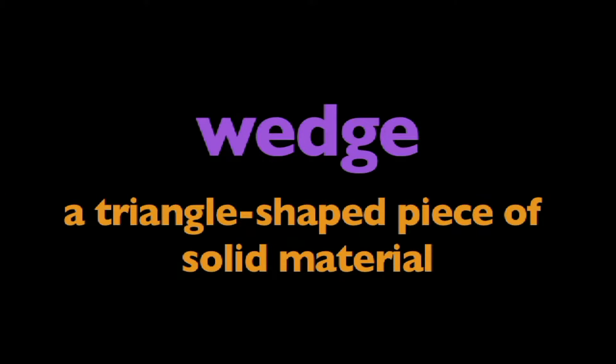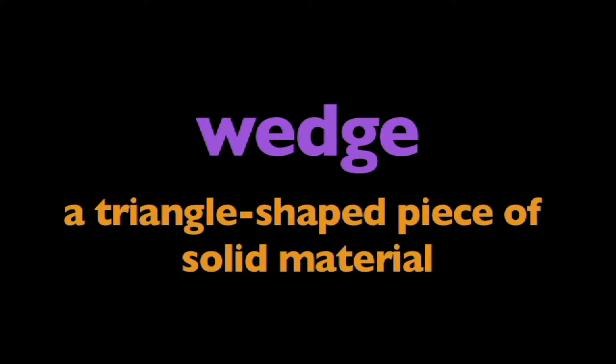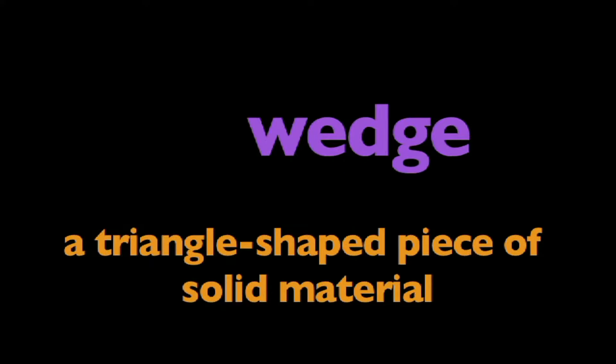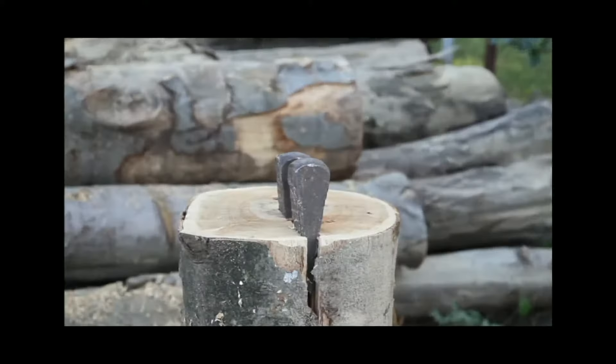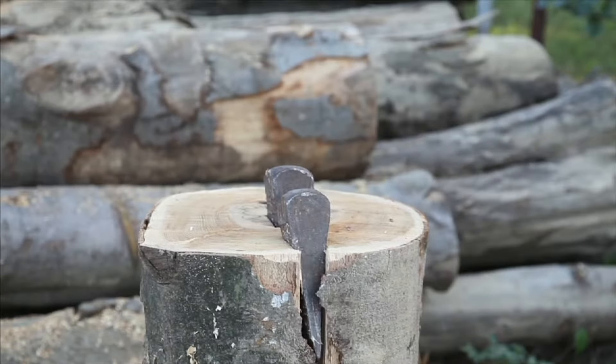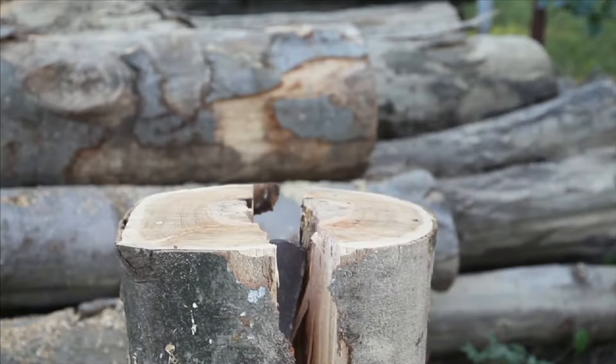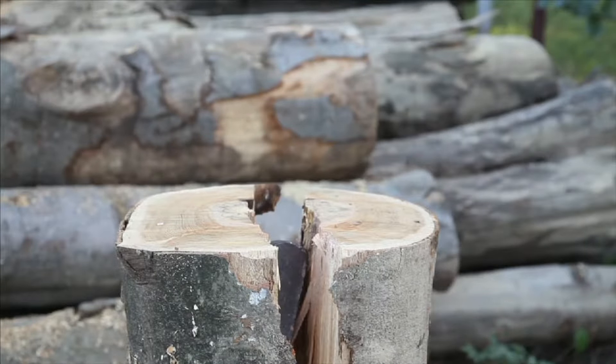In this program, we are going to learn about wedges. What is a wedge? A wedge is a triangle-shaped piece of solid material. A wedge is a simple machine that helps you to push things apart.